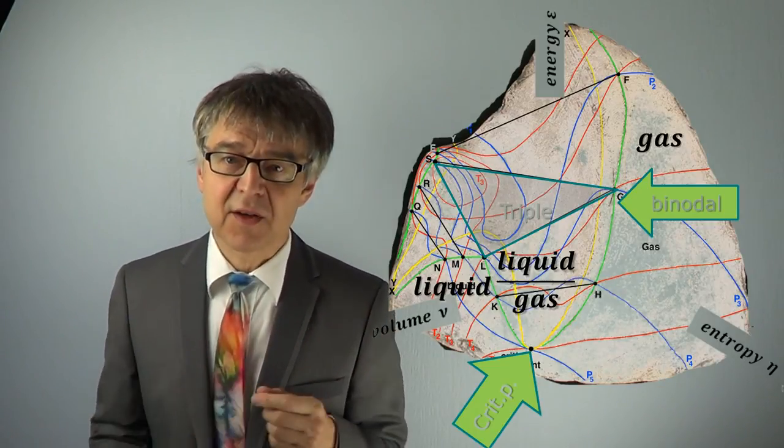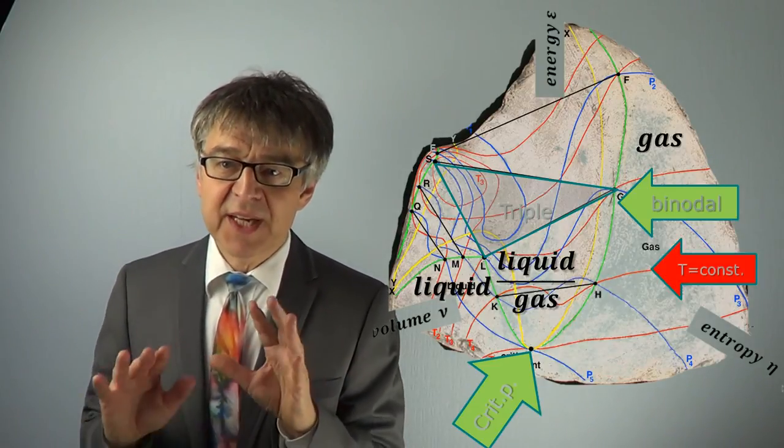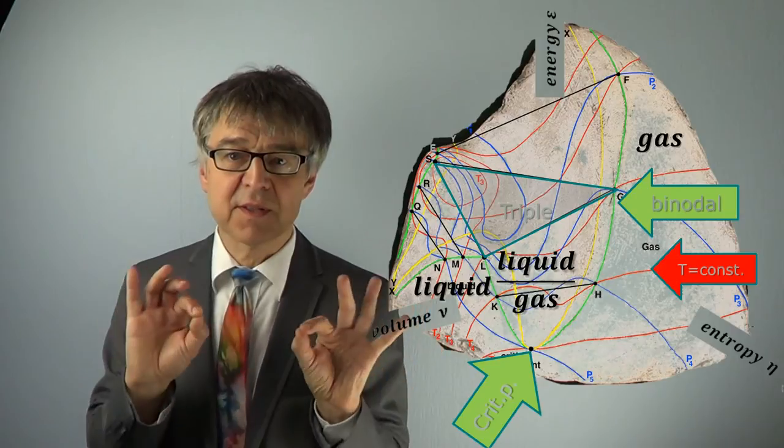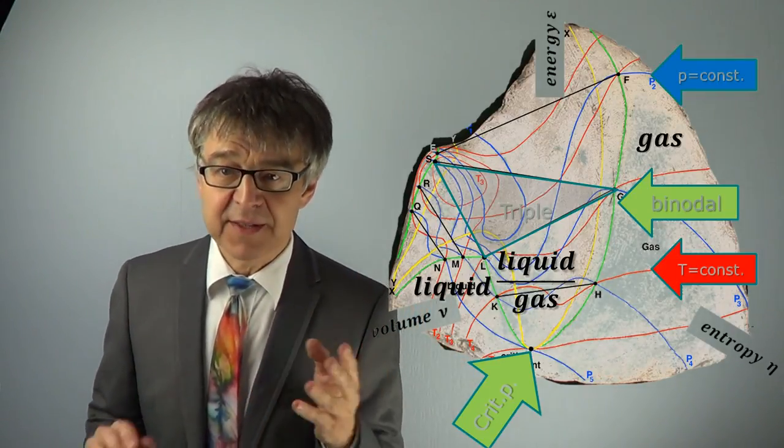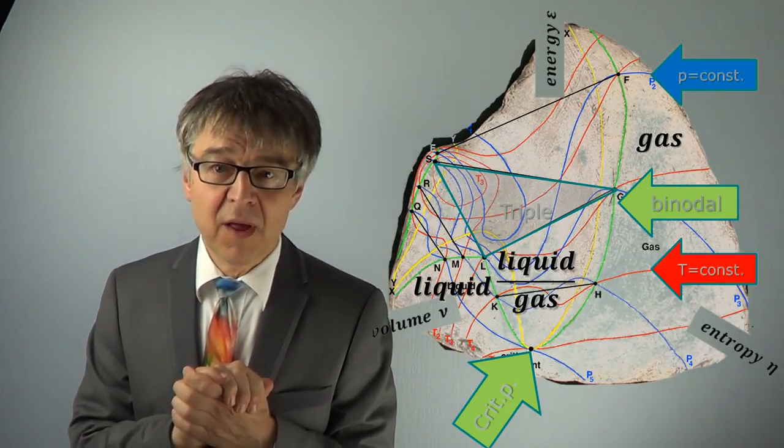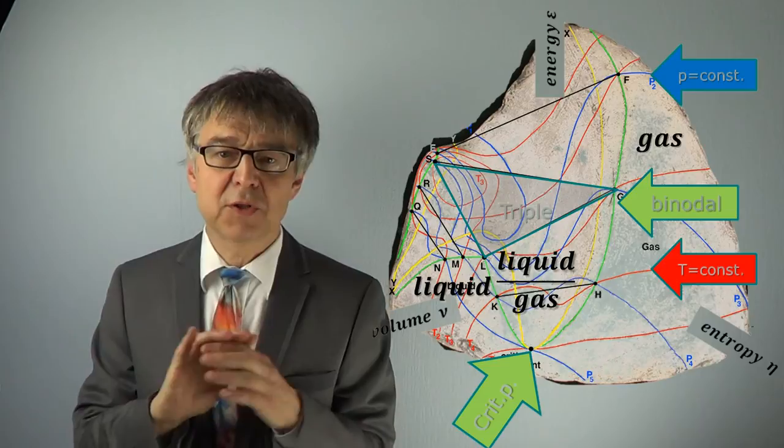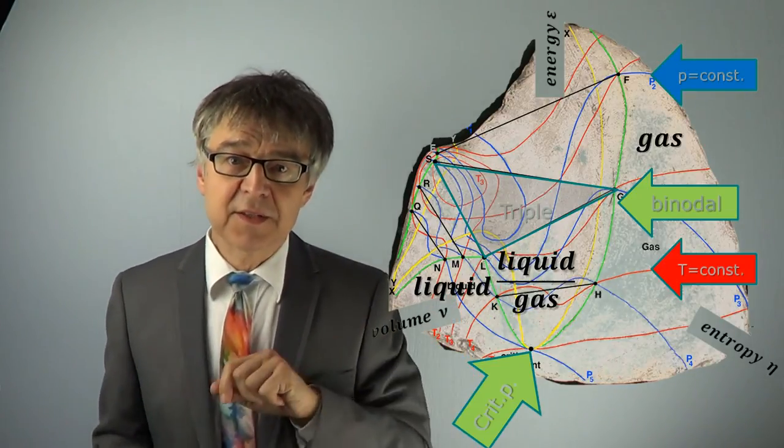On the surface of his model, Maxwell engraved lines of constant pressure in blue and constant temperature in red, as calculated according to the first and second law. These lines correspond to lines of constant slope in V or Eta direction.